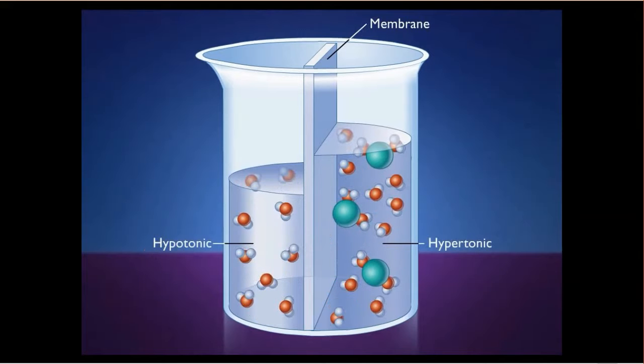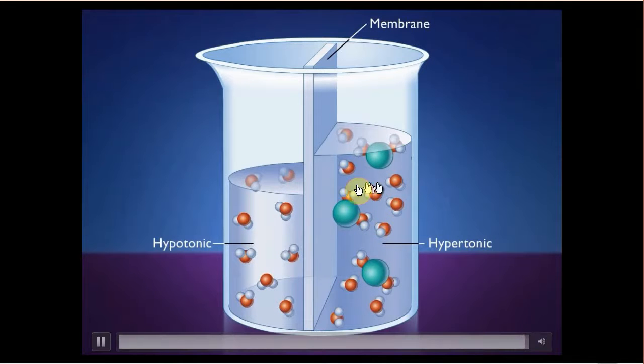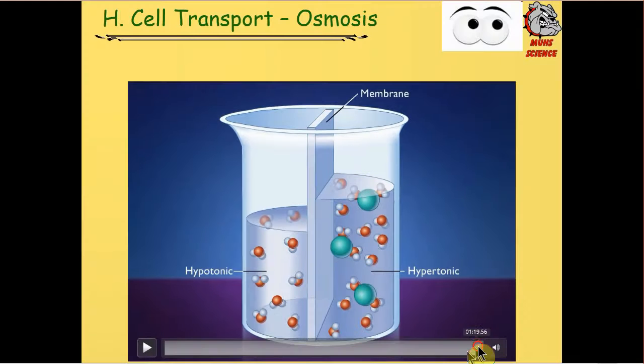Hypertonic is just a word that means it has more water molecules. And so if you visually look, there were more water molecules. There's more water molecules on the right than there are on the left. There are fewer water molecules down here. So hypo means under, hyper means over. So we have over amount of water, under amount of water.